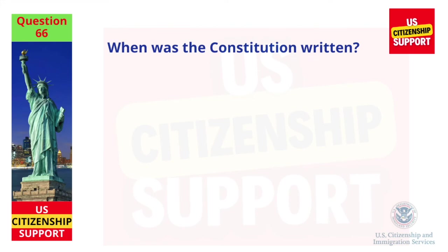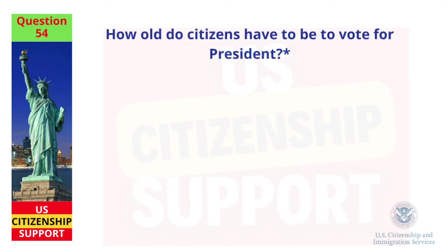When was the Constitution written? 1787. How old do citizens have to be to vote for president? 18 and older.